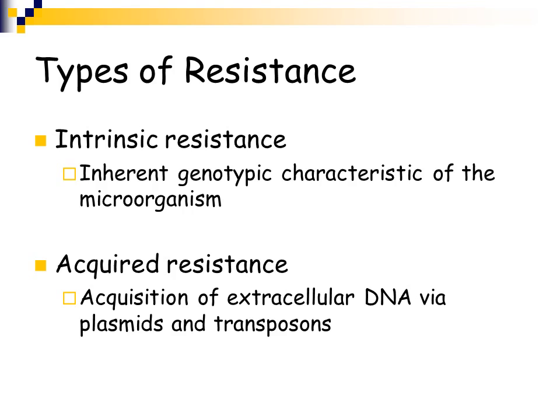Other bacteria will take in a plasmid — a self-replicating circular piece of DNA. Some bacteria can randomly take in plasmids, and if they take in a plasmid that's carrying a resistance gene, they will become resistant. For example, Enterococcus can take in plasmids and become resistant to antimicrobial agents. There are also transposons, called jumping genes — little pieces of DNA that can jump around the chromosome and possibly insert a resistance gene.